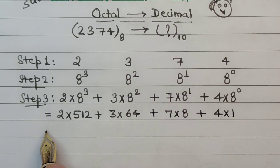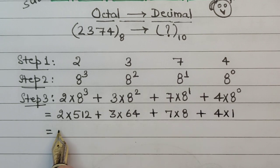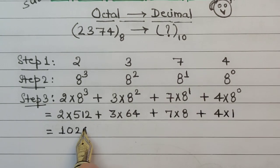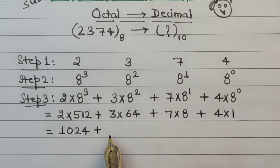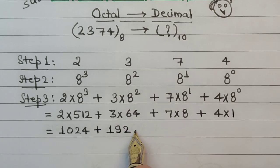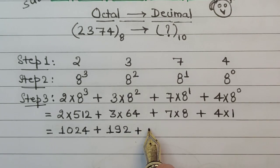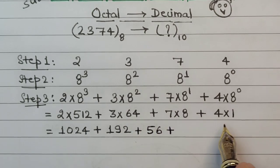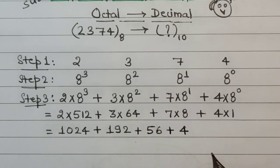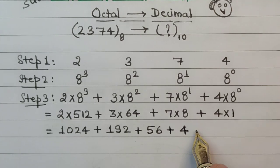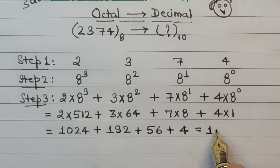So this will generate a number 1024, then we have 3 into 64 which is 192, then we have 7 into 8 which is 56, and then we have 4 into 1 that is 4. So as soon as we add all these numbers, we get the final answer as 1276.